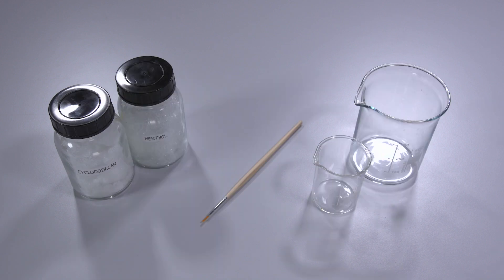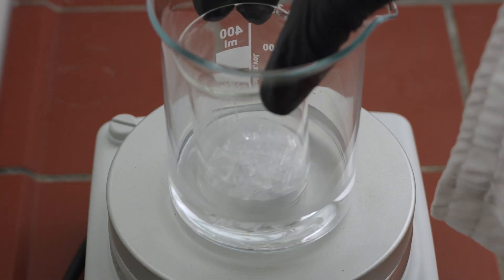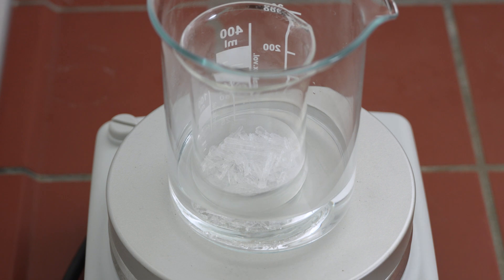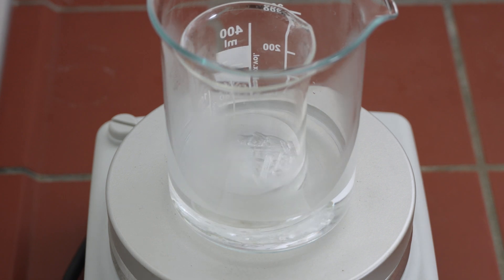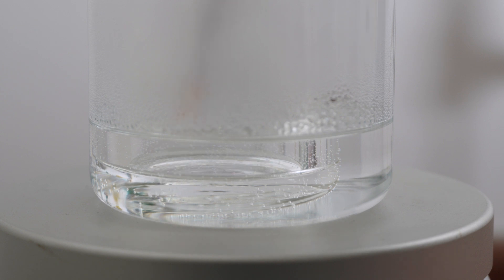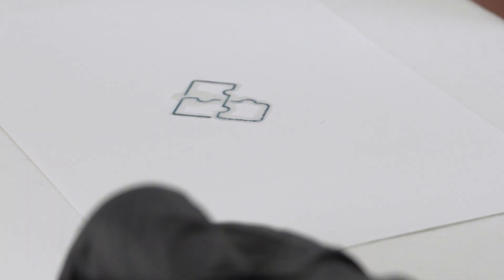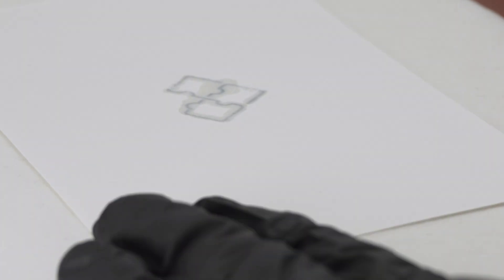To apply a melt you need cyclododecane or menthol, beakers, a brush and a heating plate. The volatile binder is melted in a beaker in a water bath. The melt is picked up with a brush and then quickly applied to the colour medium.